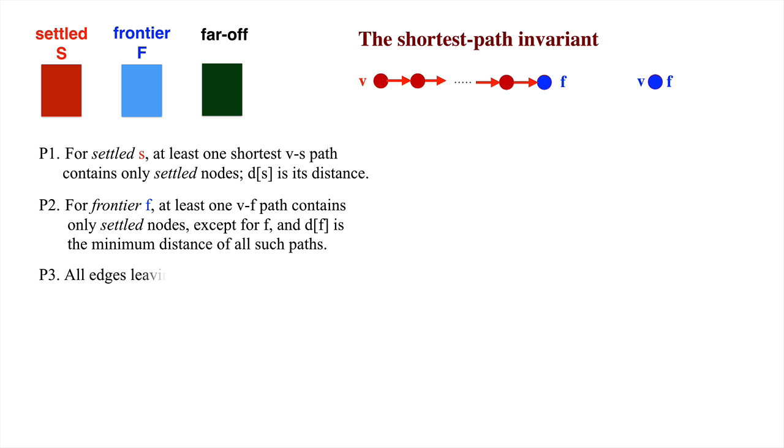Here's the third part of the invariant, 3. All edges leaving the settled set end in the frontier set. That's all there is to the invariant, three simple and easy to remember points.